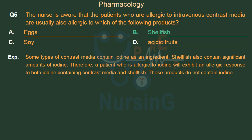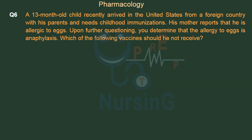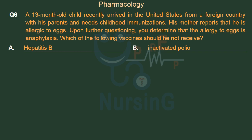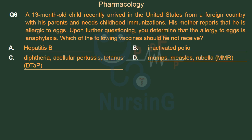These products do not contain iodine. A 13-month-old child recently arrived in the United States from a foreign country with his parents and needs childhood immunizations. His mother reports that he is allergic to eggs. Upon further questioning, you determine that the allergy to eggs is anaphylaxis. Which of the following vaccines should he not receive? Option A: Hepatitis B. Option B: Inactivated polio. Option C: Diphtheria, acellular pertussis, tetanus (DTaP). Option D: Mumps, measles, rubella (MMR).